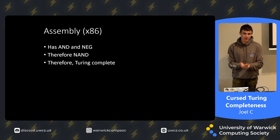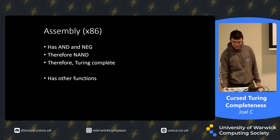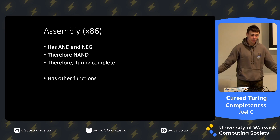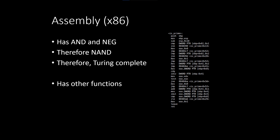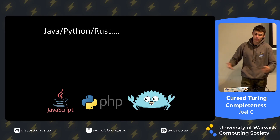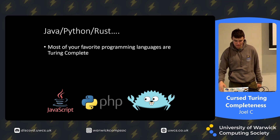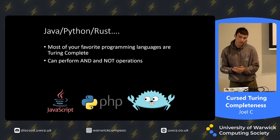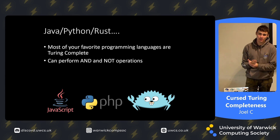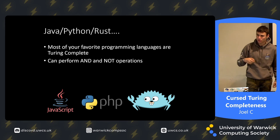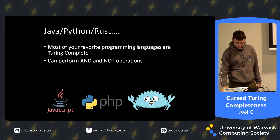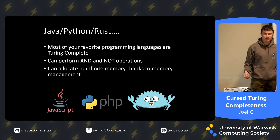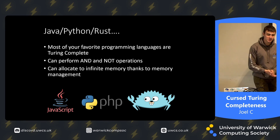Assembly, like many other languages, has other functions as well because programming with NAND gates is going to be a pain, so it has various functions that make code neater and more readable. For example, this code determines whether a number is prime or not. Other things that are Turing complete are most of your favourite programming languages — Java, Python, Rust — all Turing complete. They can form AND operations through selection and NOT operations, and importantly they can allocate to infinite memory through their various memory management systems.